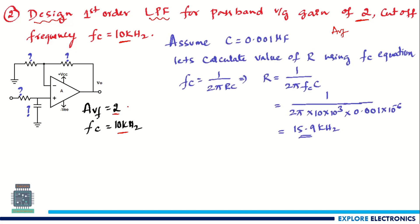First, assume the capacitor value. The capacitor should always be less than 1 μF. From the previous problem, C = 0.001 μF was used, so we use the same here. Alternatively, you can assume C = 0.01 μF or 0.1 μF. In low-power first-order low pass filters, typical values are 0.01 μF or 0.001 μF.